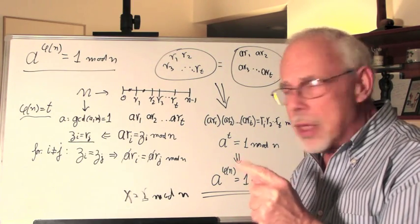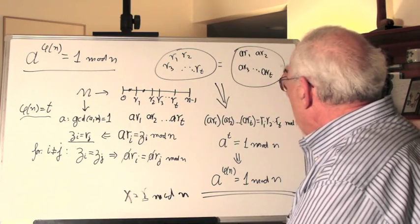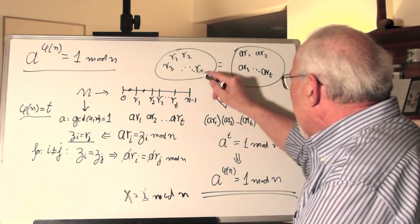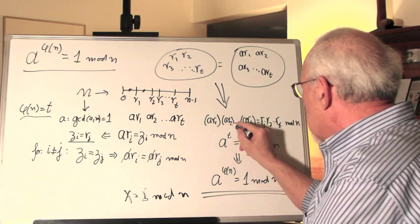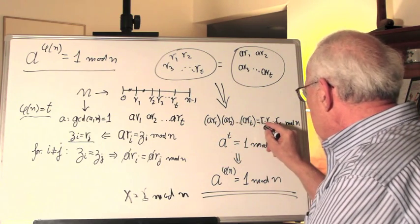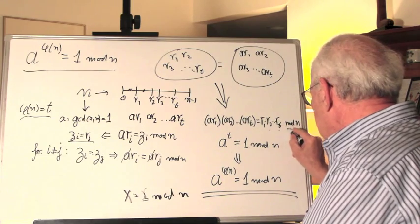That means that if I multiply all those numbers and I multiply all these numbers, I get the same result. So let's write it down: aR1 times aR2 times aRt equals R1 times R2 times Rt mod n.